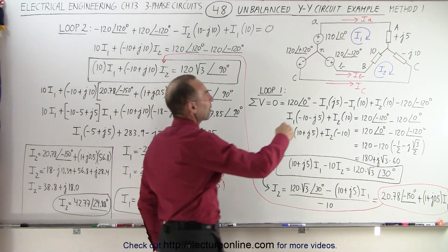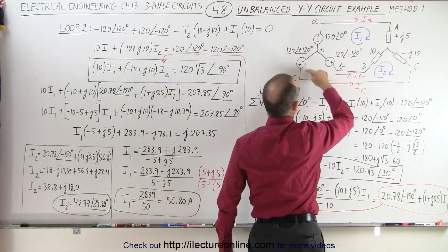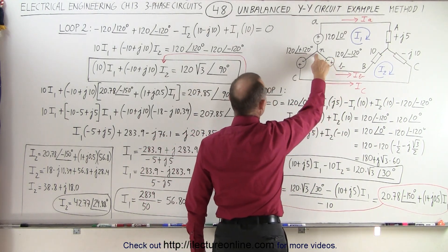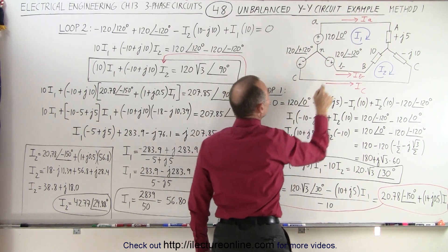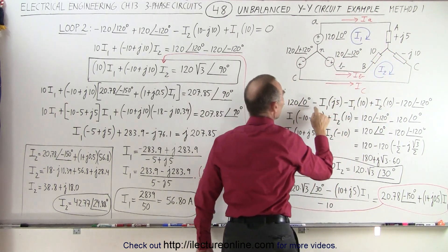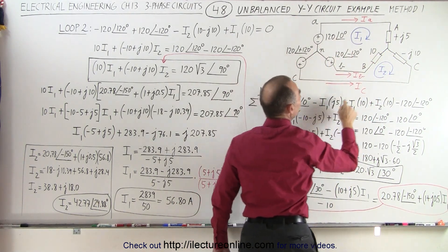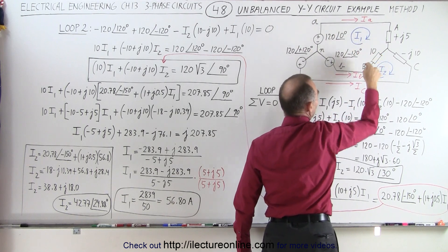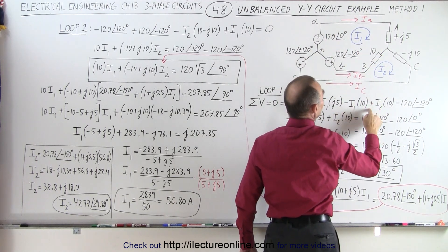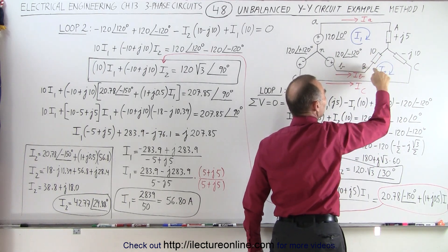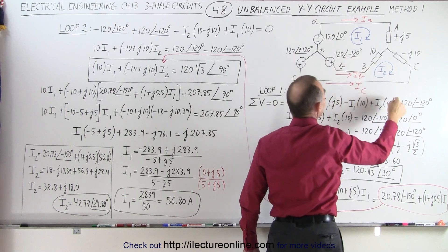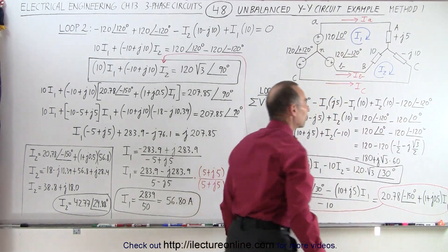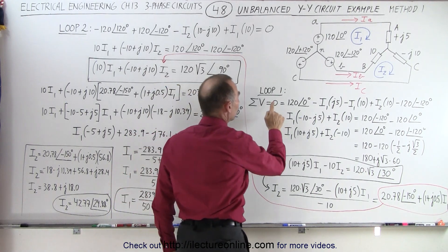First, we're going to recognize that we have one loop right here and a second loop right over here, so we're going to add up all the voltages around each of the loops. Starting with loop 1, start at the neutral point — we have a plus 120 volt rise. Then we have a drop across this impedance, so it's minus I1 times J5. Then we have a drop minus I1 with an impedance of 10, and a voltage rise I2 times 10. Then we have a voltage drop of minus 120 at a phase angle of minus 120 degrees. All those voltages should add up to zero.